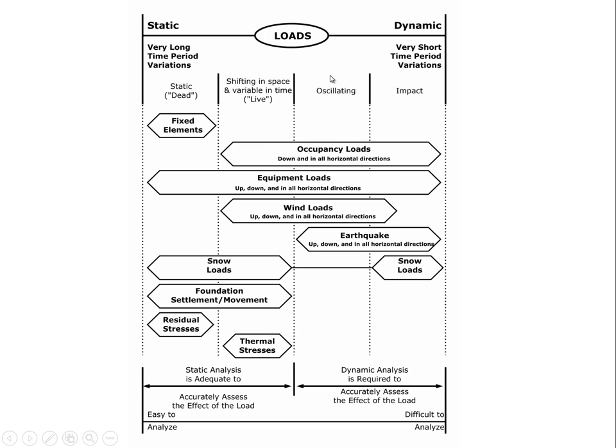Occupancy loads can also be oscillating in nature. People in a stadium swaying side to side can induce oscillating motion in the structure. Whoever designs the stadium must understand the likely frequencies at which people might move in unison and properly account for that. Any space where people might dance in an oscillatory manner must also be accounted for — and this can go all the way to the impact end of the scale, such as people doing the bunny hop.